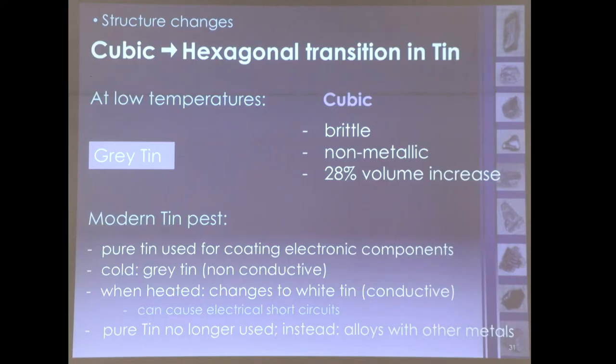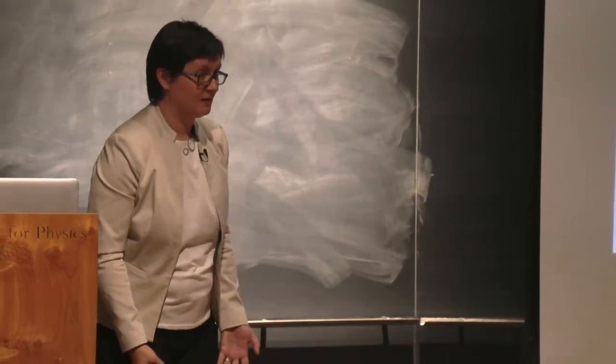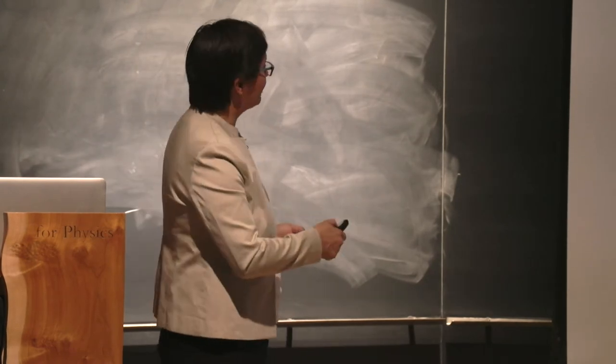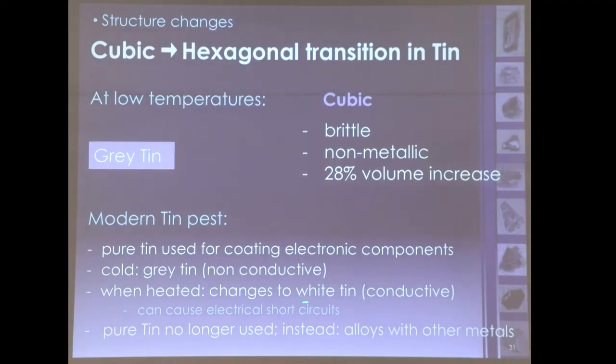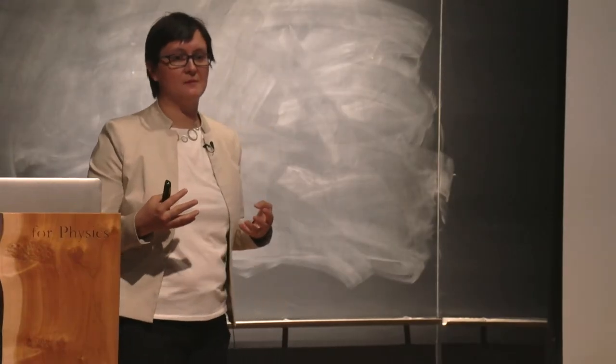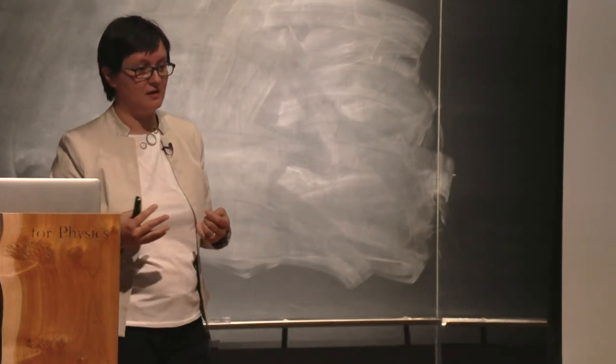There's a modern tin pest, which has to do with electronic components. Many years ago, tin was used in coating of electronic components. Before those electronic components were in use, the tin, the low temperature tin, which was non-conductive, was the gray form. But when you're using those components, you've held a laptop in your lap, and it warmed up. Then the tin goes from gray to the higher temperature, or white tin, which becomes conductive. But not only that, because of the change in volume, the coating comes off and falls wherever. And because now these bits of tin are conductive, they can produce short circuits. There's a regulation that's been in place for some time now, that pure tin can no longer be used in coating of electronic devices. It has to be alloyed with antimony, or bismuth, or anything else that prevents this structural phase transition.